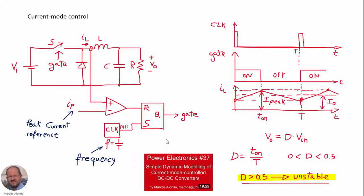In this previous video, Power Electronics number 37, we presented the current mode control of DC-DC converters. In this control methodology, what we are doing is to measure the current through the inductor and compare this current with a peak value. When the current through the inductor reaches this peak value, the transistor of the converter is turned off and then we wait until the end of the period. After this period, the clock activates again the transistor. We are operating at constant switching frequency F, and we studied the behavior and presented a dynamic model for the converter.